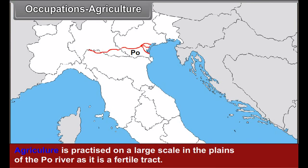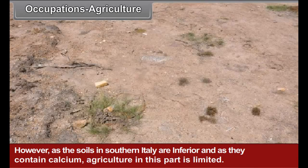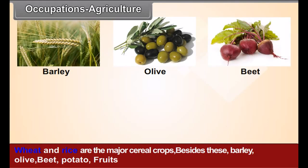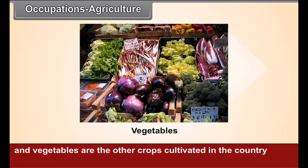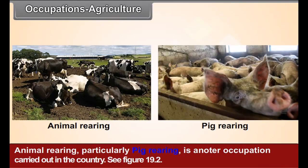However, as the soils in southern Italy are inferior and contain calcium, agriculture in this part is limited. Wheat and rice are the major cereal crops. Besides these, barley, olive, beet, potato, fruits, and vegetables are the other crops cultivated. Animal rearing, particularly pig rearing, is another occupation carried out in the country.